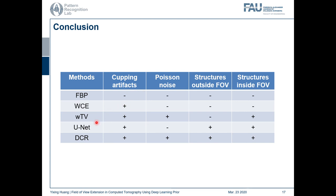In conclusion, we can see DECA as a hybrid method. DECA combines the advantages of compressed sensing and deep learning. For compressed sensing only, it is not able to reconstruct the structures outside the FOV. For deep learning only, it is sensitive to noise. With our DECA method, it is able to reduce cupping artifacts as well as residual noise, and it is able to reconstruct the structures both inside and outside the FOV. Thank you very much.